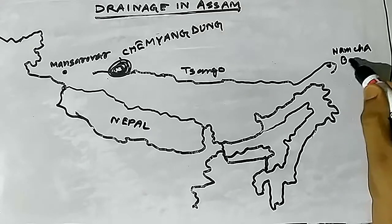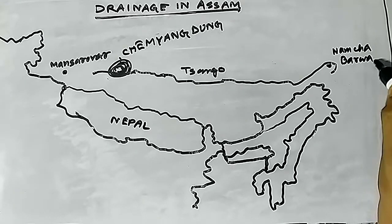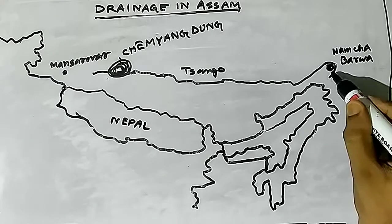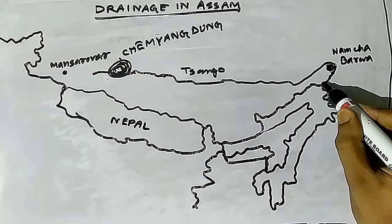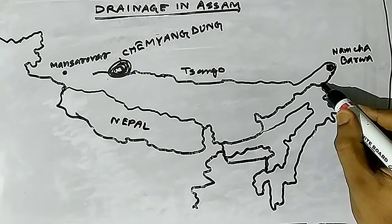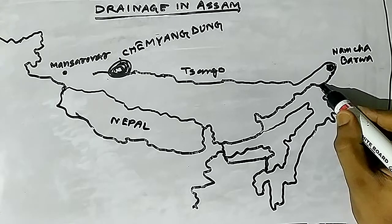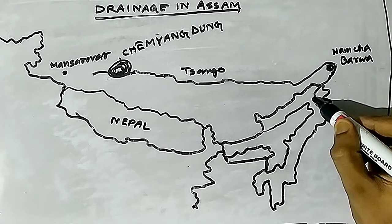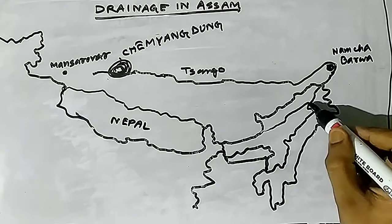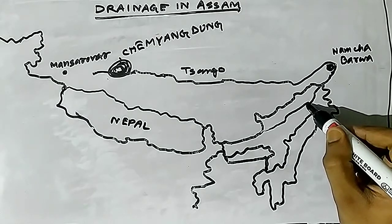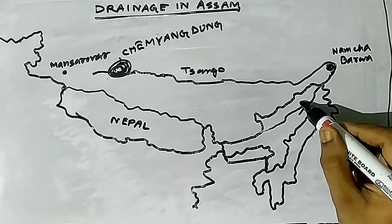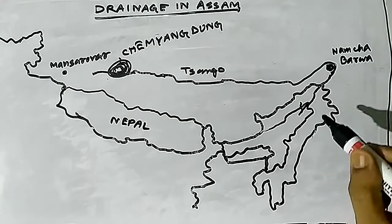Namcha Barwa is in the Arunachal hill ranges. As it enters Arunachal near the place called Tuting, it is known as Siyang. After flowing through the hilly region for about 200 km, it enters the plains near Pasighat, which is the border region of Assam and Arunachal Pradesh, and takes the name Dihang. After entering Assam near Kobo, Dihang meets Dibang and Luhit, which come from the north and southeast respectively.